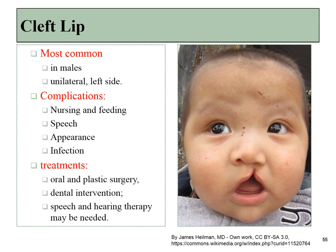Treatments can include oral and plastic surgeries. One thing to consider when surgery is done is that the baby's face is still growing, and surgeries leave behind scar tissue, which doesn't grow. So it's important to wait a while before engaging in surgery. On the other hand, we have to worry about not waiting too long, to allow children to learn speech more easily. Dental interventions might also be necessary, and if early stages of speech development are impaired, speech and hearing therapy may be needed as well.